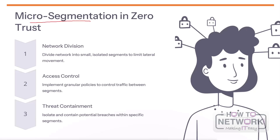Micro-segmentation is a key component of the Zero Trust security model. It involves dividing the network into small, isolated segments or zones, which limits the ability of attackers to move laterally across the network. Granular access control policies are implemented to carefully control traffic between these segments, allowing you to isolate potential security breaches within specific zones and preventing them from spreading. The goal is to create a more secure, resilient network architecture that is better equipped to withstand modern cyber threats.